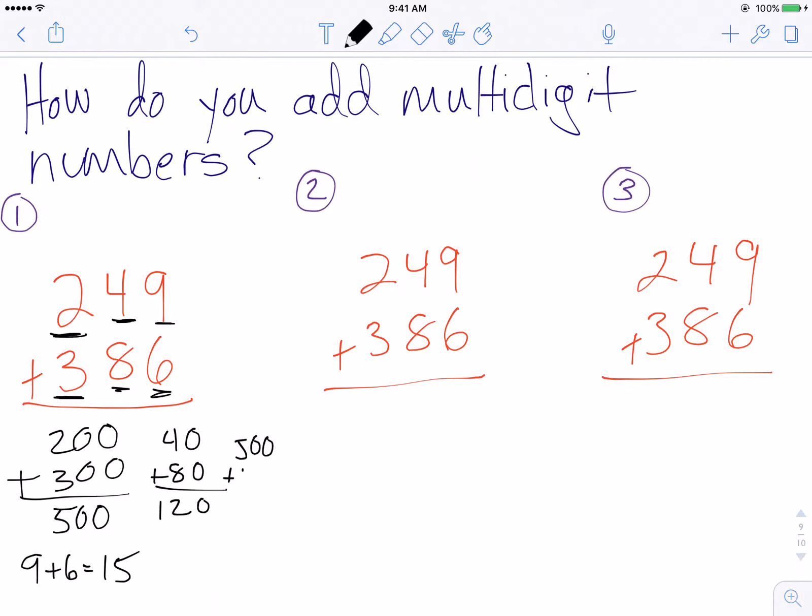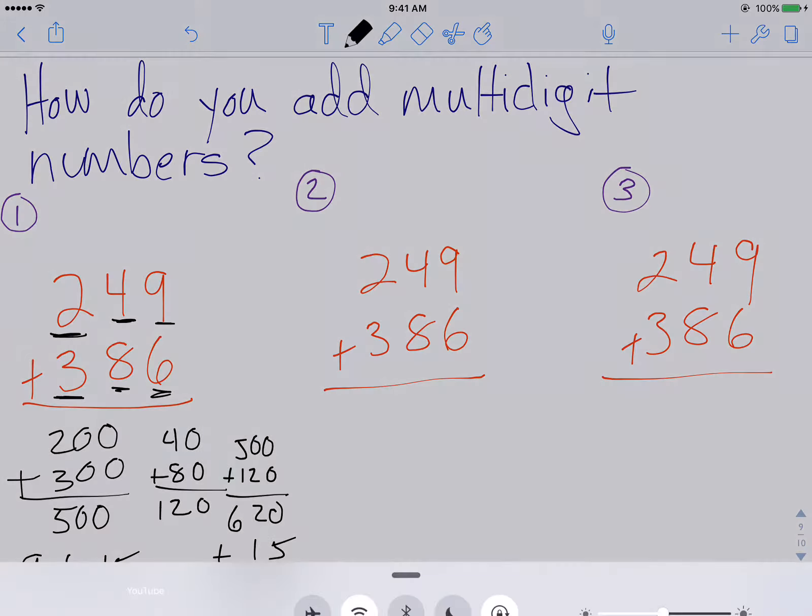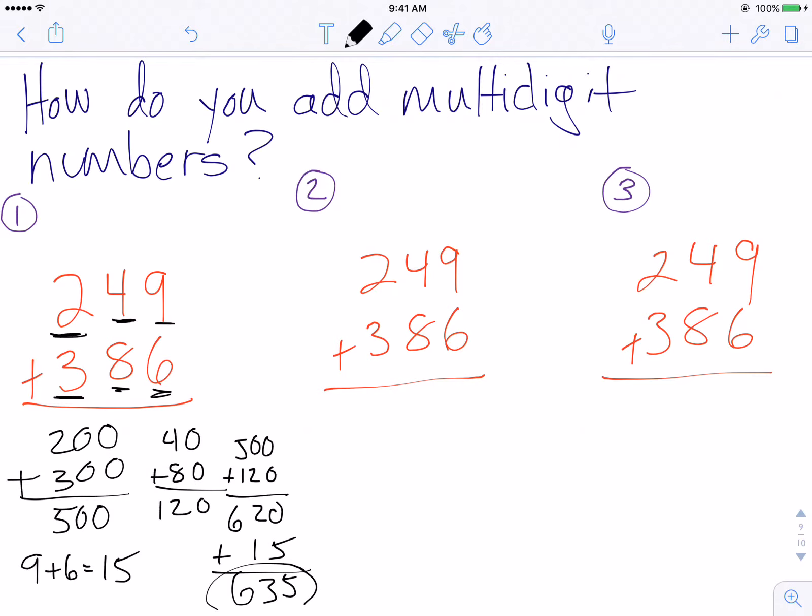500 plus 120 is 620, plus my 15 is 635. So 635 is my final sum for 249 plus 386. It's a little bit involved in that one, but you can do it that way.